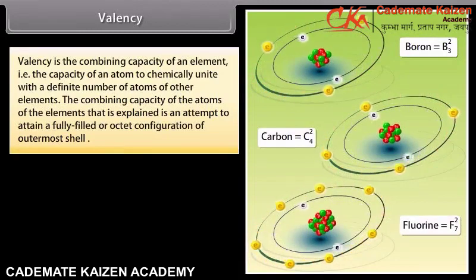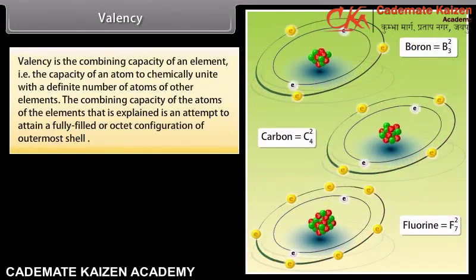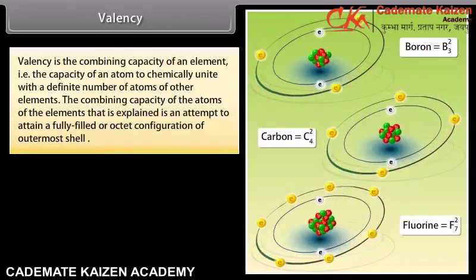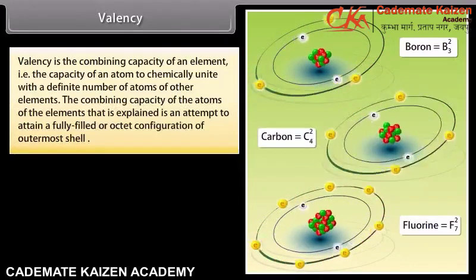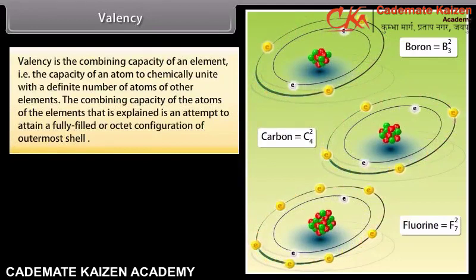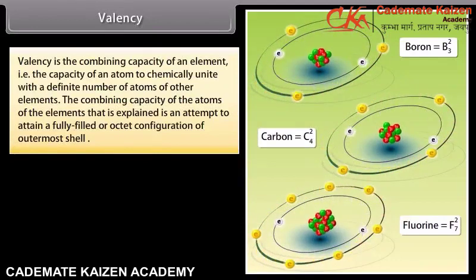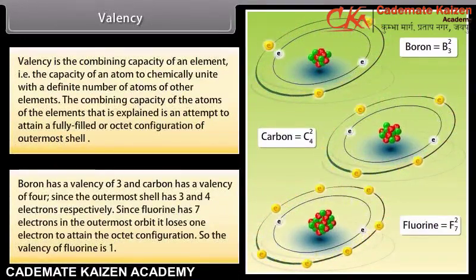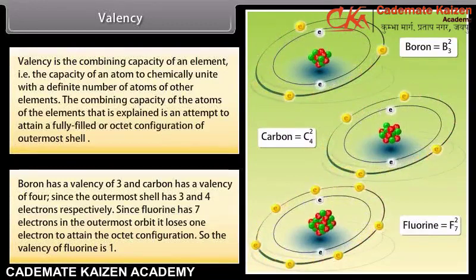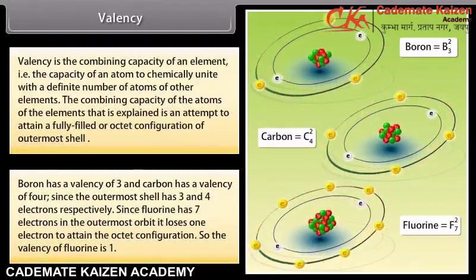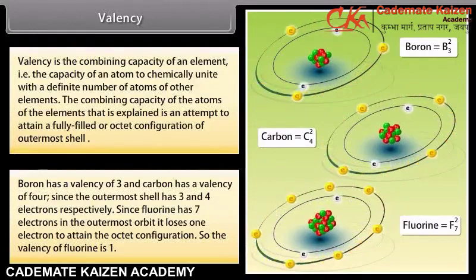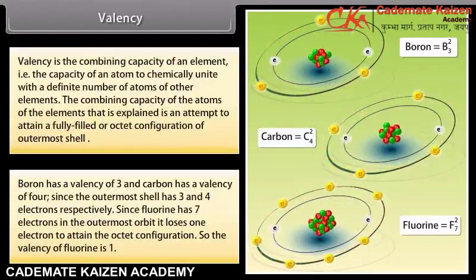Valency. Valency is the combining capacity of an element — that is, the capacity of an atom to chemically unite with a definite number of atoms of other elements. The combining capacity of atoms is explained as an attempt to attain a fully filled or octet configuration of the outermost shell. Boron has a valency of 3 and carbon has a valency of 4, since the outermost shell has 3 and 4 electrons respectively. Since fluorine has 7 electrons in the outermost orbit, it needs to gain 1 electron to attain the octet configuration, so the valency of fluorine is 1.